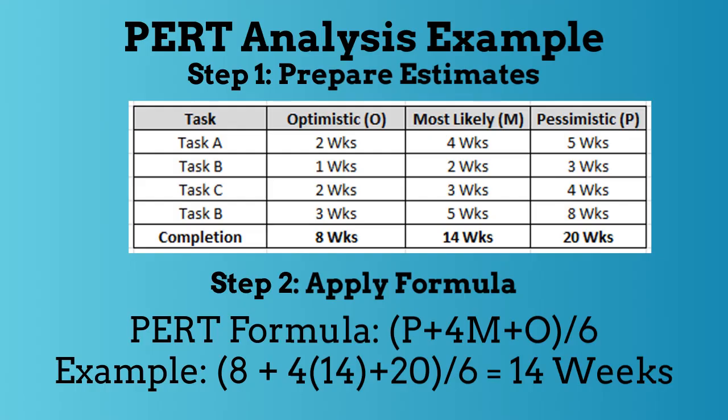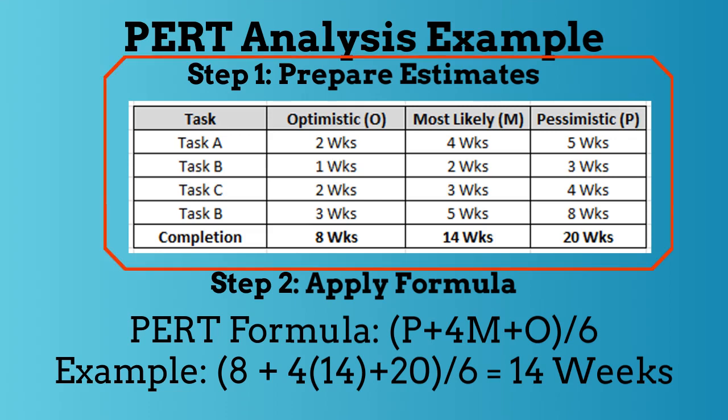This slide shows an example of a PERT analysis. Step 1: develop three different estimates for optimistic, most likely, and pessimistic for each task. You can see these estimates inputted into a chart for tasks A, B, C, and D.